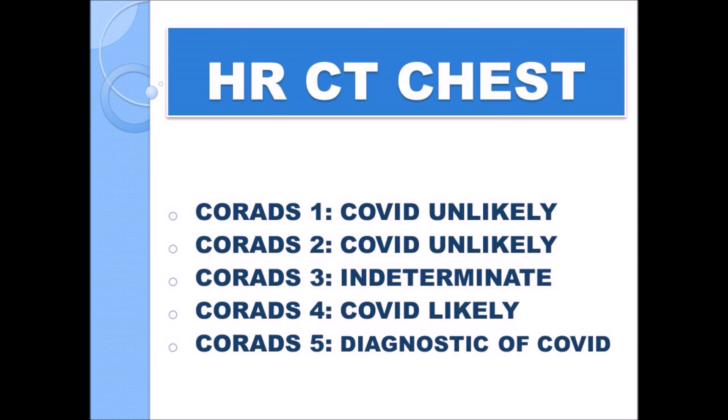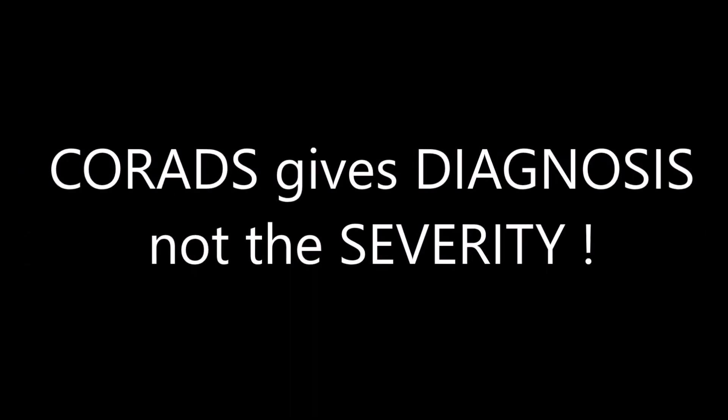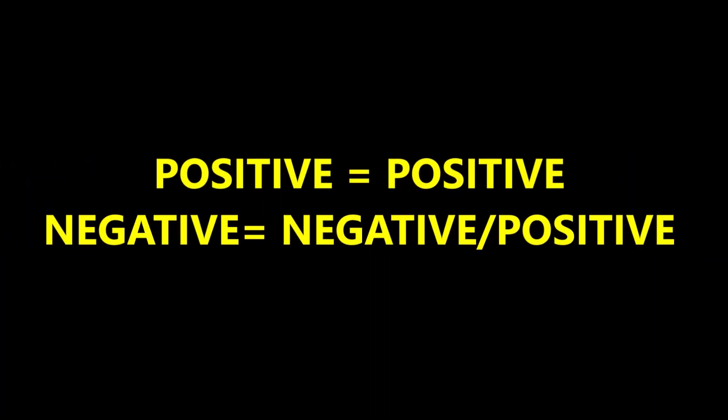Third in line is the HRCT chest. For the purpose of diagnosis, a scoring system called the CoRAD score was devised. Scores of one and two imply it is unlikely to be COVID; score three is indeterminate — it can be or cannot be COVID; however, scores of four and five are diagnostic of COVID infection. It is important to mention that the CoRAD scoring system only indicates diagnosis, not severity of infection.